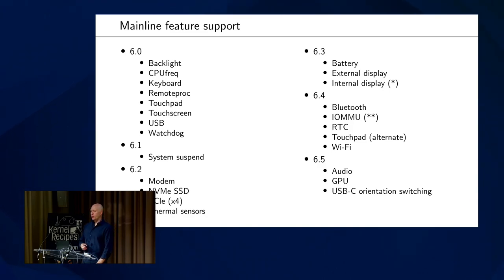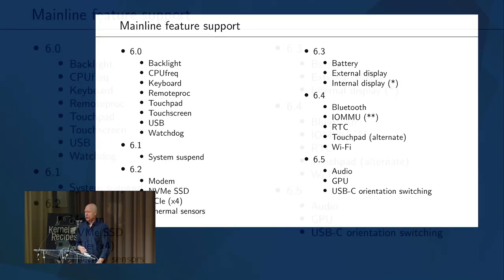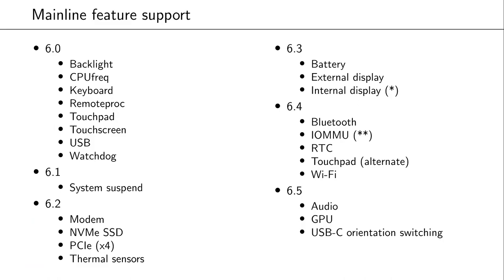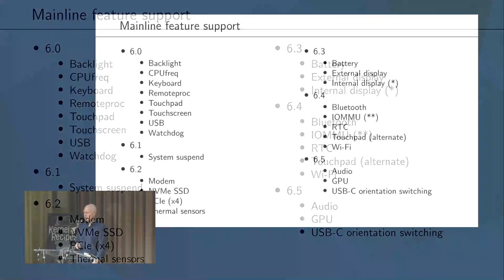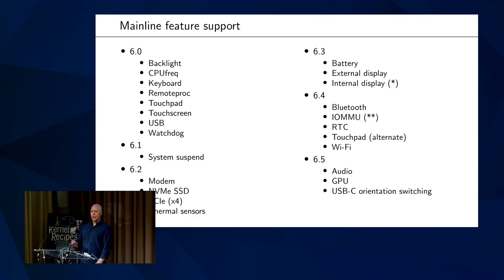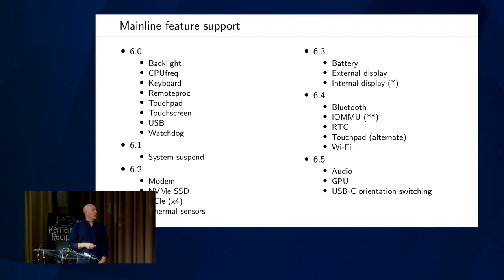So where do we stand today? We got the base device tree into 6.0, along with support for USB, keyboard, and backlight. 6.1 added support for system suspend. PCIe took a bit of time due to refactoring needed upstream, but once we had that we had the NVMe SSD we could boot off. 6.3 added support for the internal display, meaning we were down to a single patch needed to boot mainline — a quirk needed for the IOMMU due to interaction with Qualcomm's hypervisor. Wi-Fi was not enabled until 6.4 because of the time it took to get the board file. With 6.5, we have audio and GPU as well — basically feature complete. I'm traveling with this laptop; it's my primary device.